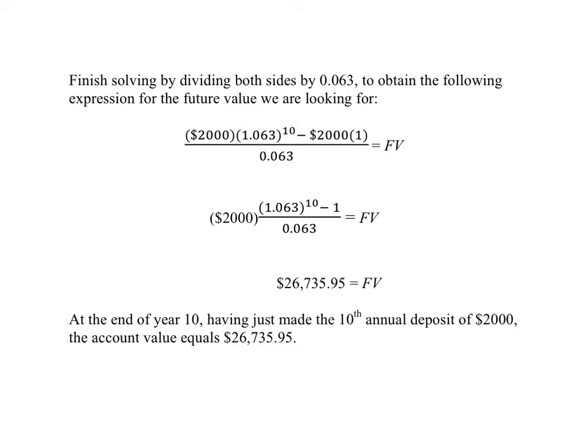FV, you recall, is the future value of our fixed deferred annuity, the result of making 10 separate deposits of $2,000 into an account that pays 6.3% annual interest. So we need to compute this.